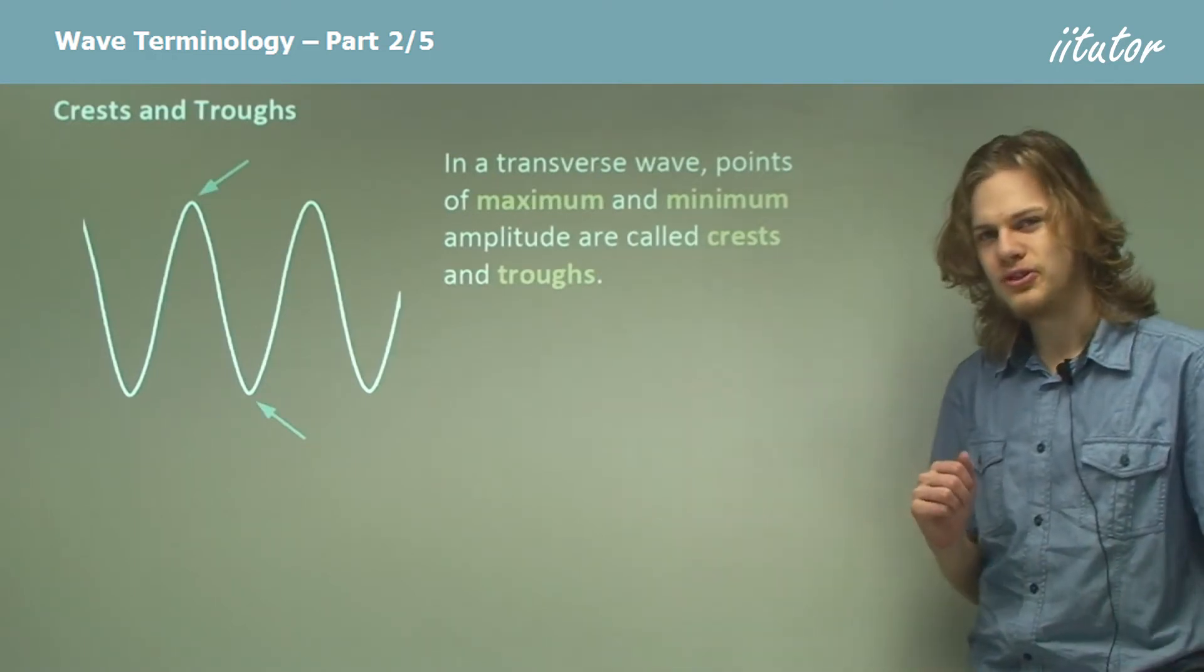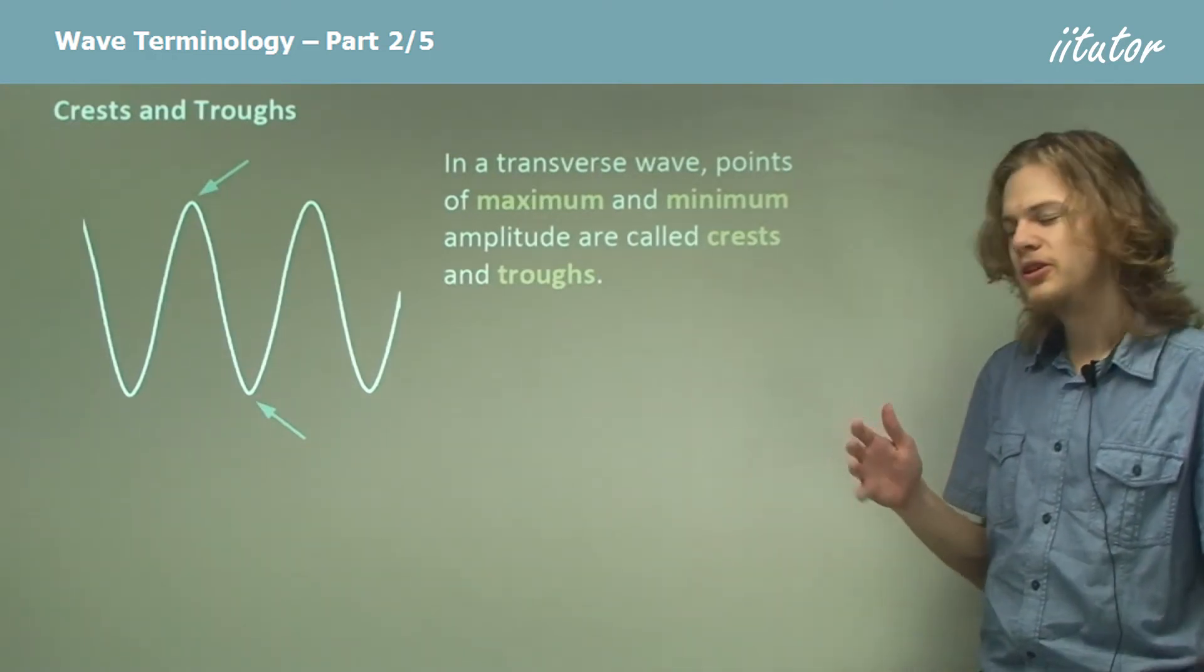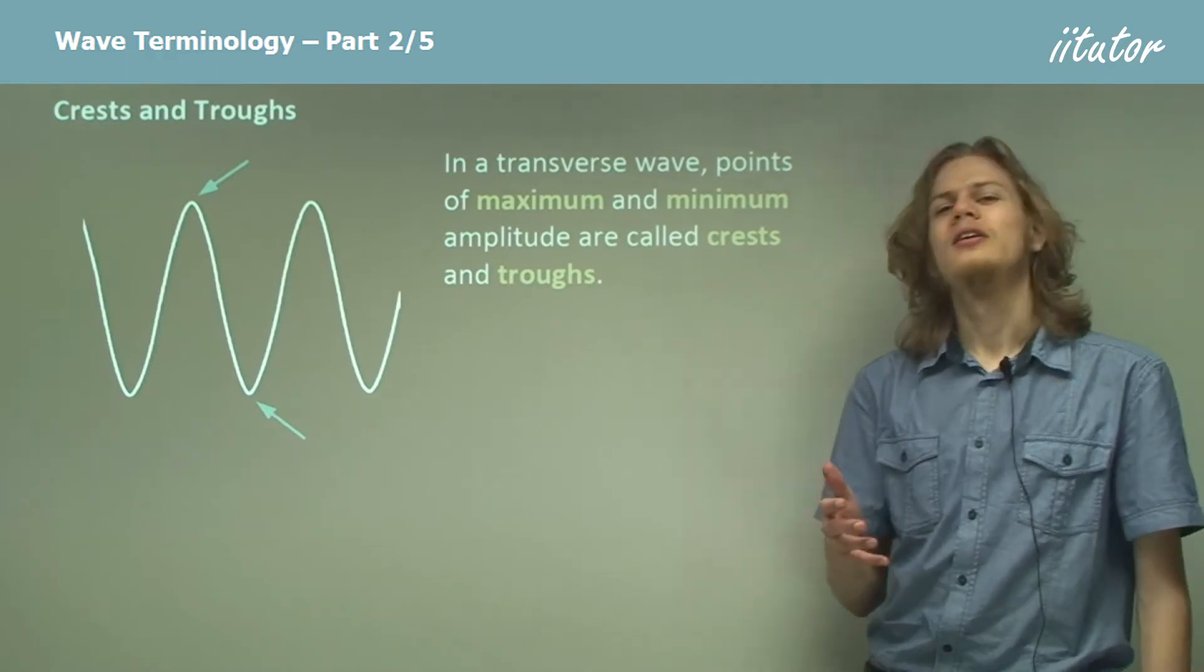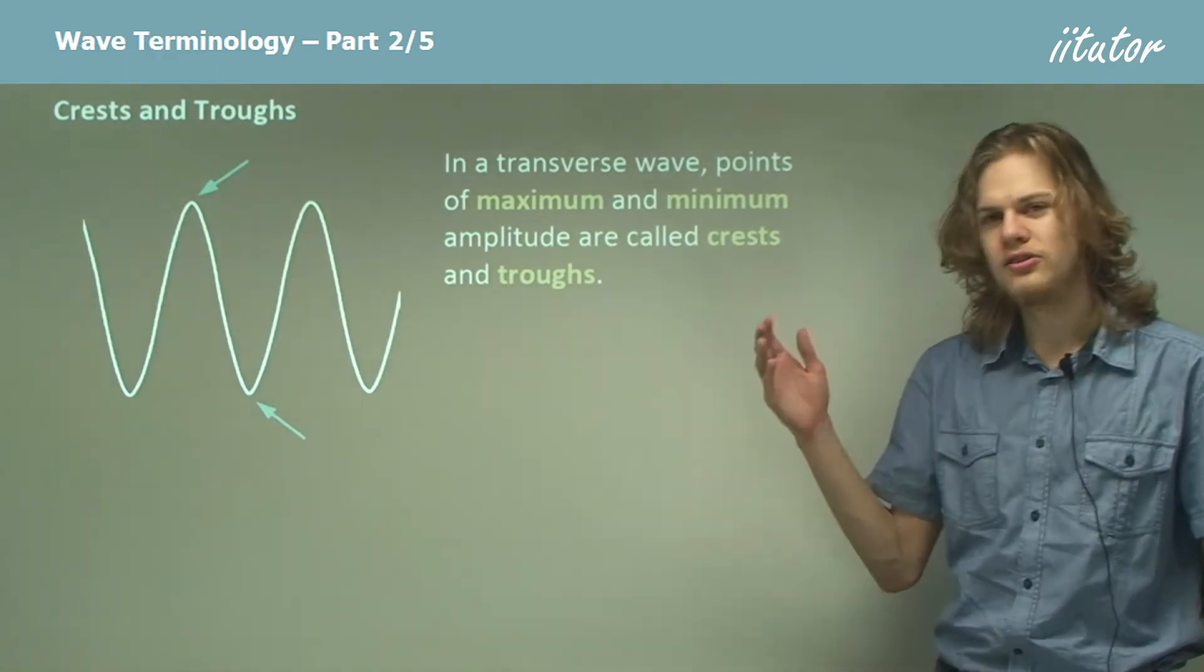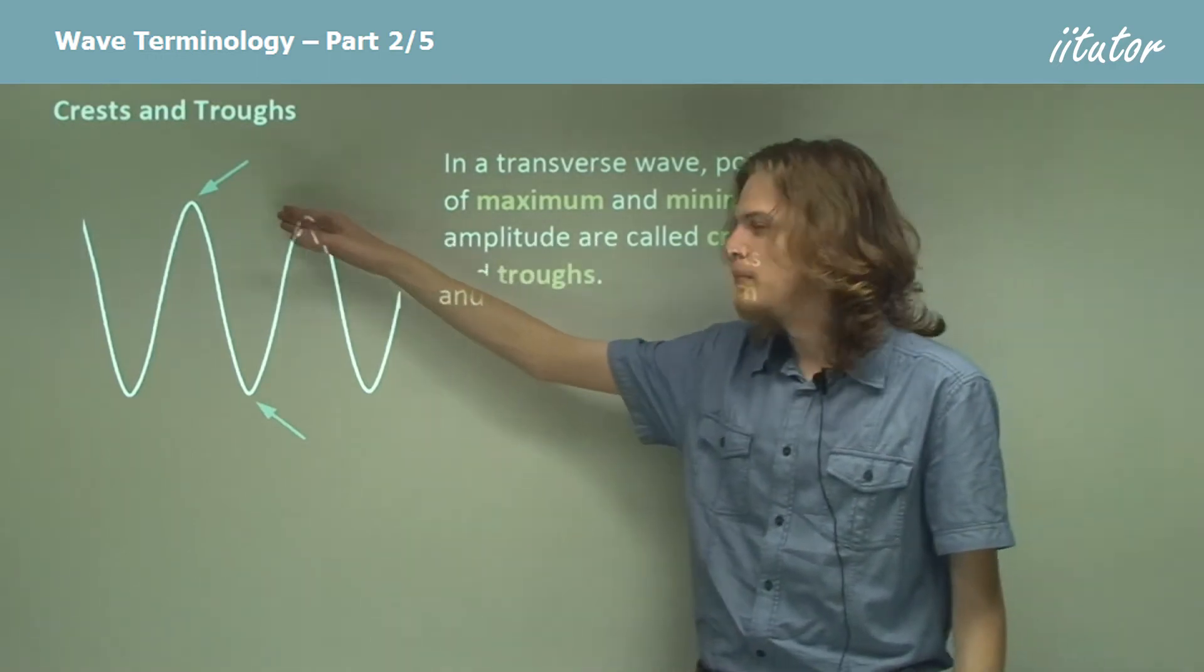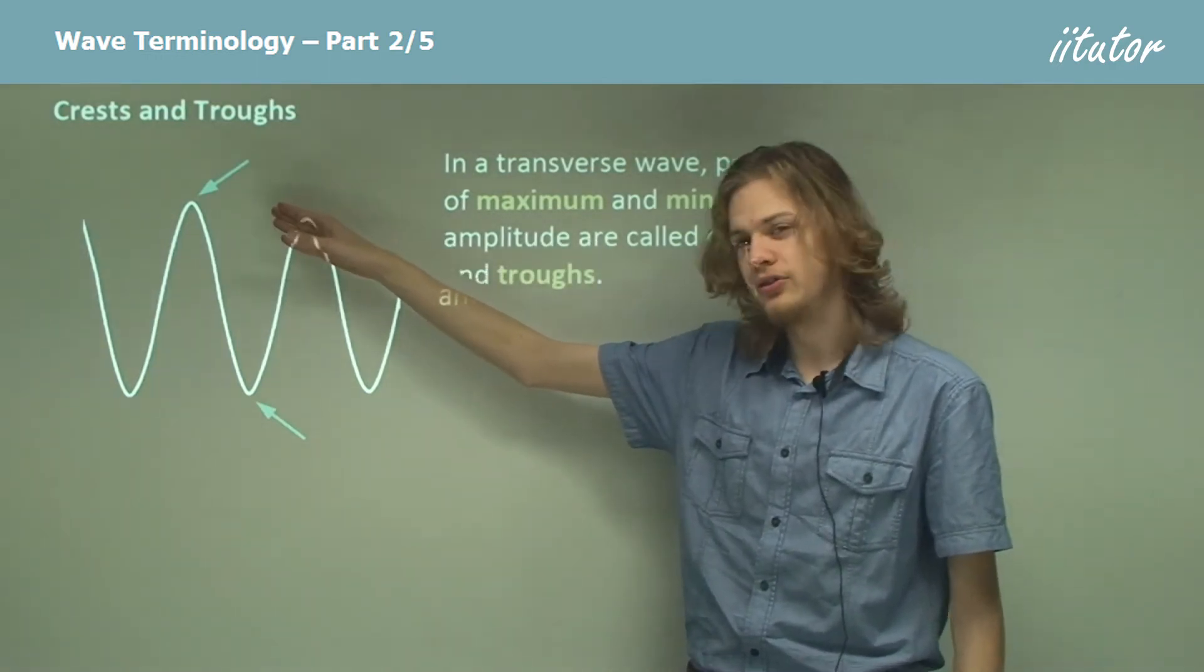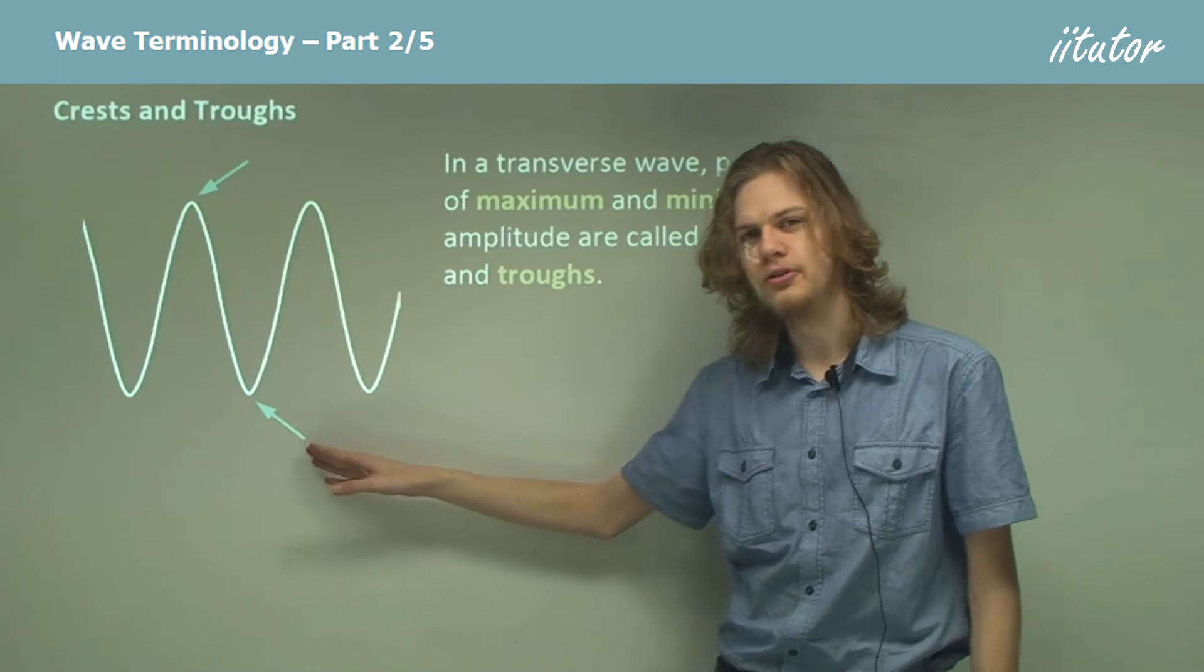Crests and troughs. These are particular parts of the wave as opposed to properties of the wave, and they're simply going to be points of maximum amplitude, a crest, and minimum amplitude, a trough.